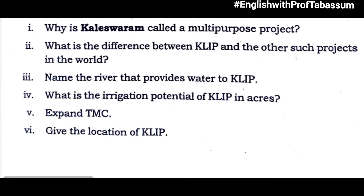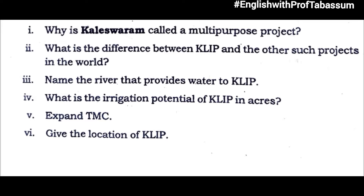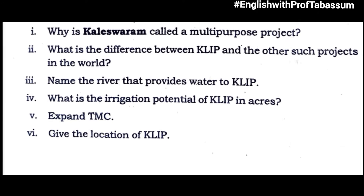Questions on the Kaleshwaram passage: Q1: Why is Kaleshwaram called a multipurpose project? — Because it provides irrigation, drinking water, water transport, fisheries and tourism. Q2: What is the difference between KLIP and other such projects in the world? — KLIP is built with three barrages, 20 lifts and 20 reservoirs. Q3: Name the river that provides water to KLIP. — The river Godavari provides water to KLIP. Q4: What is the irrigation potential of KLIP in acres? — 37 lakh acres. Q5: Expand TMC. — 1,000 million cubic feet. Q6: Give the location of KLIP. — It is constructed at Kaleshwaram in Jayashankar Bhupalpalli district.